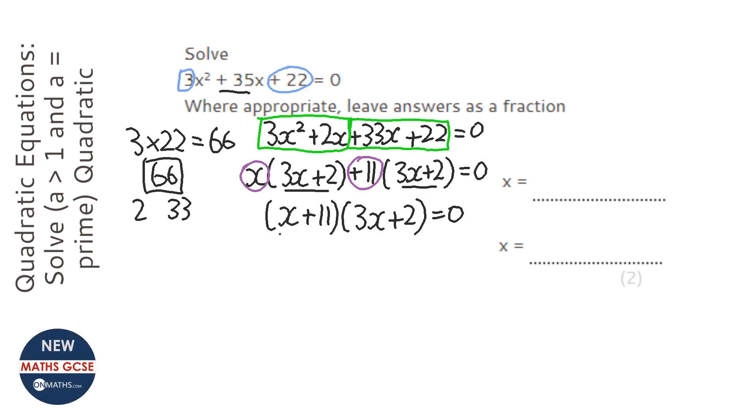OK, now we've got two brackets here that multiply to make zero. Well, one of them has to be zero for that to happen. So we're going to get the first one to equal zero, and we're going to take away 11 both sides, which makes minus 11.